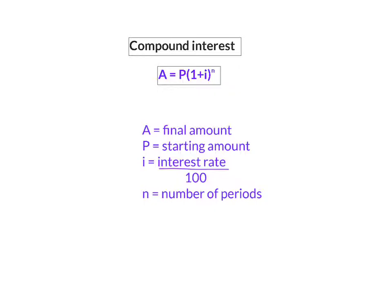I is still the interest rate divided by 100, and n the number of periods. There's only one small difference between simple interest formula and compound interest formula, and that is the fact that the number of periods n is now in the exponent.